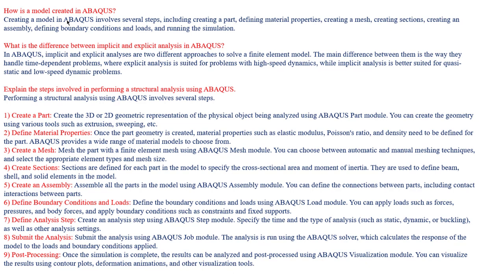The next very important step is defining the material. Depending on the geometry and what kind of analysis you want to do, you define the material. For static analysis, you define Young's modulus and Poisson's ratio. Density is mainly used to check the mass of the component, whether it matches the realistic model. Abacus also has its own material database you can use.